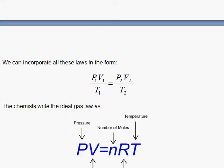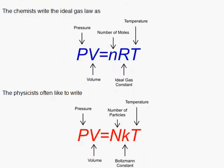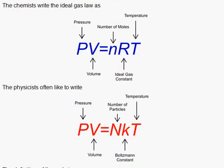The ideal gas law is written as PV = nRT or NkT, depending on whether you're a chemist or physicist. Chemists like to use the number of moles, and then we have the ideal gas constant. PV over T is a constant because in many cases the number of moles — the number of particles in the gas — does not change. So if you have a balloon, then the number of particles is a constant, and therefore you can have PV over T as a constant.